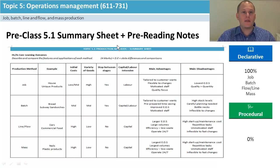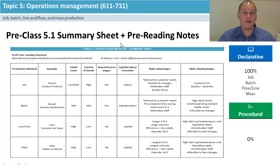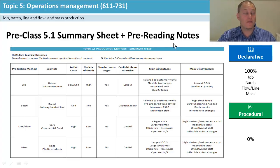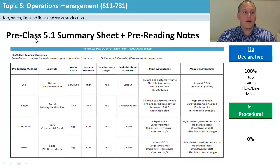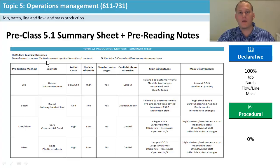I've made a summary sheet for you to have a look over before you look at your class stuff. Also have a look at your pre-reading notes in the description bar at the bottom. This topic has one main learning outcome and most questions are around four marks, maybe six marks depending on how you get the questions.